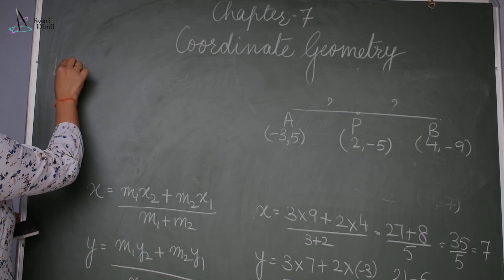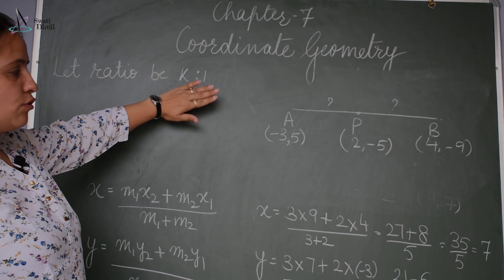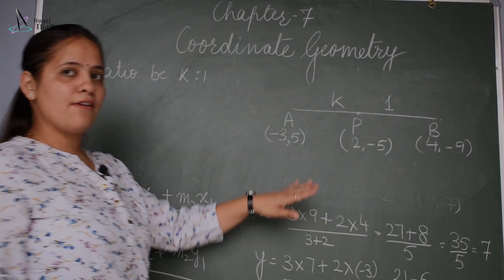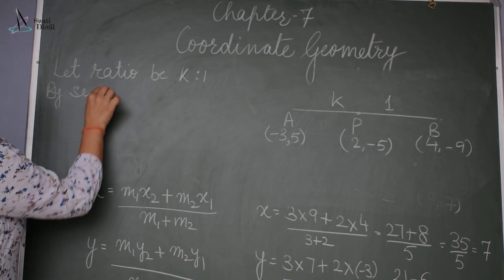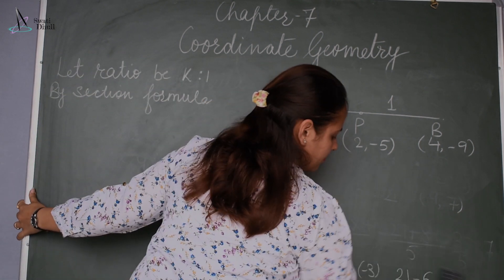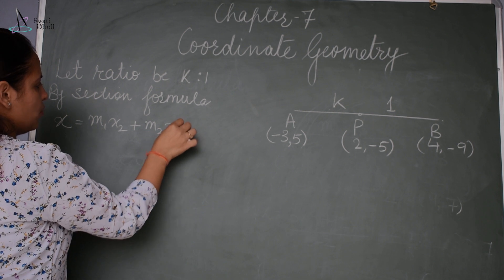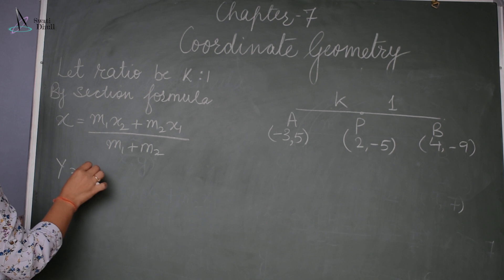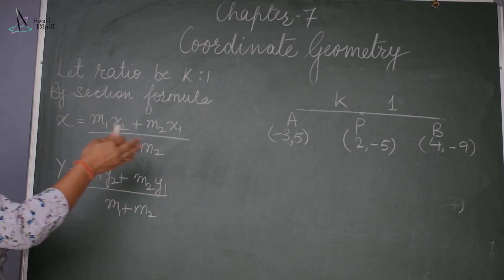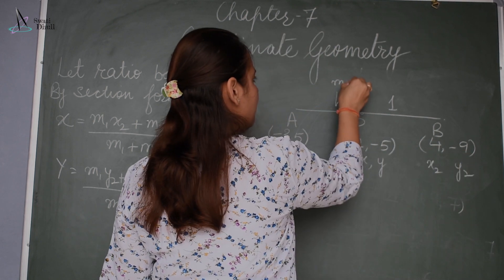Whenever you need to find the ratio, let the ratio be k:1, so k becomes m1 and 1 becomes m2. By the section formula: x = (m1·x2 + m2·x1) / (m1 + m2) and y = (m1·y2 + m2·y1) / (m1 + m2). Here x1, y1 is A(−3, 5), x2, y2 is B(4, −9), and x, y is the point (2, −5).